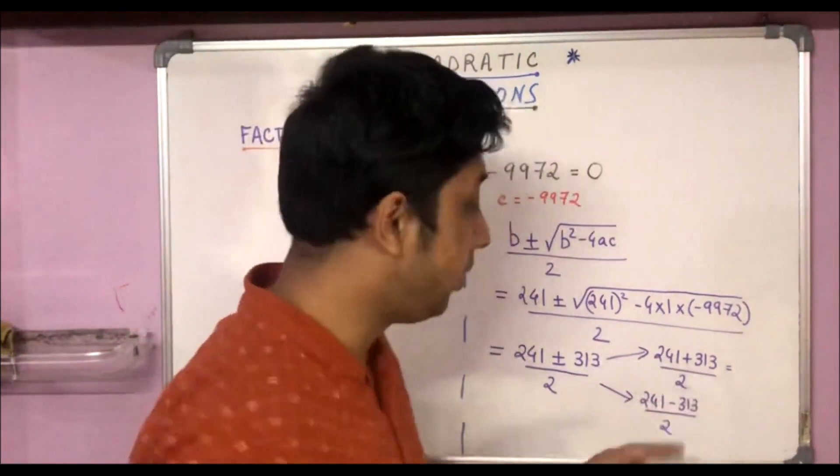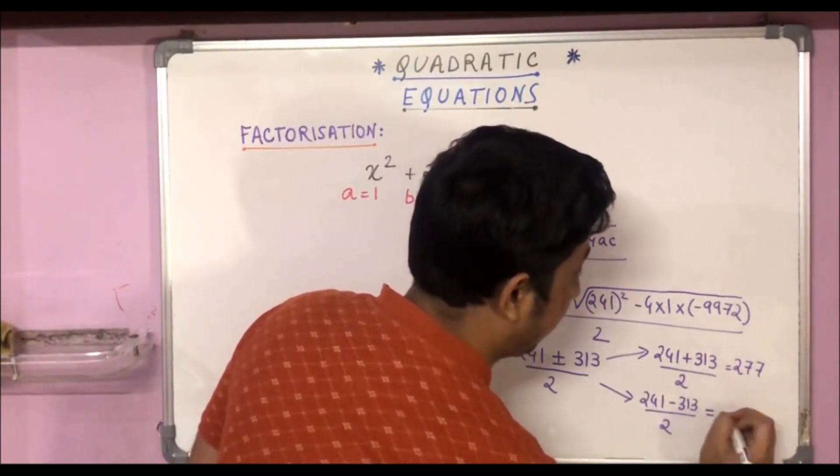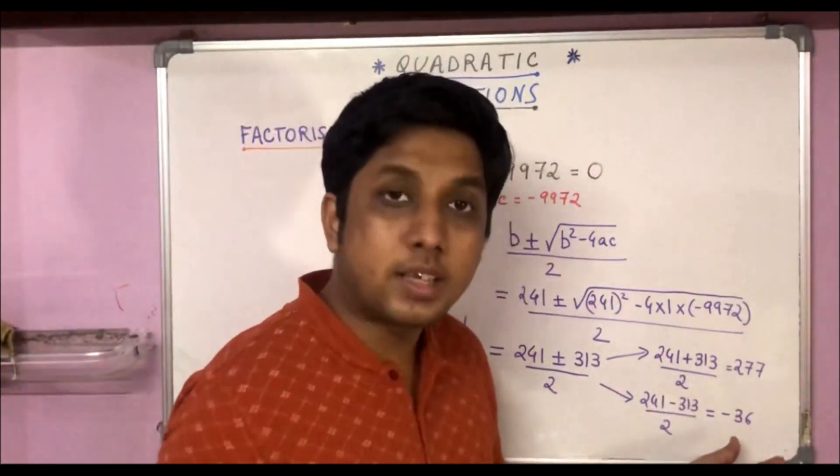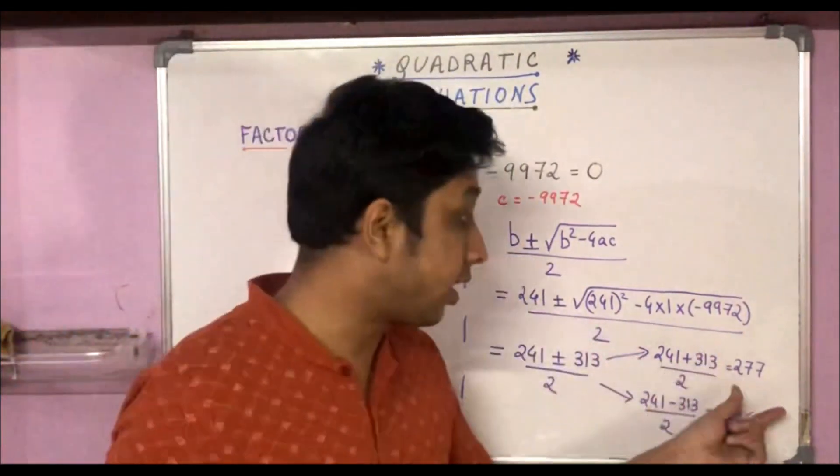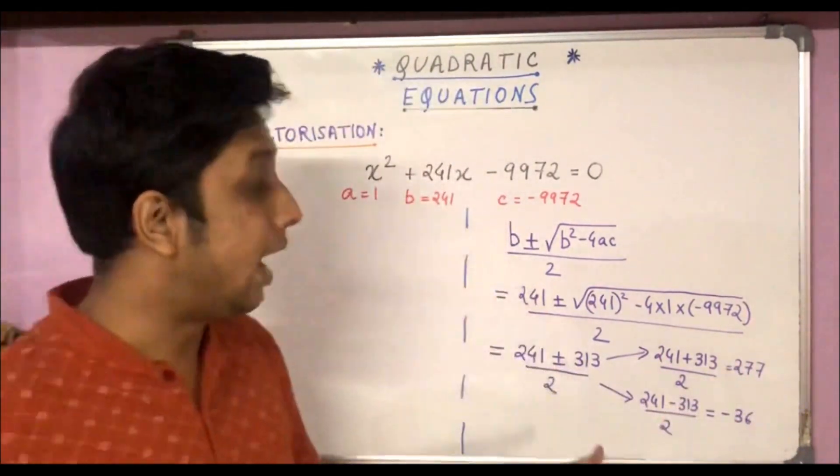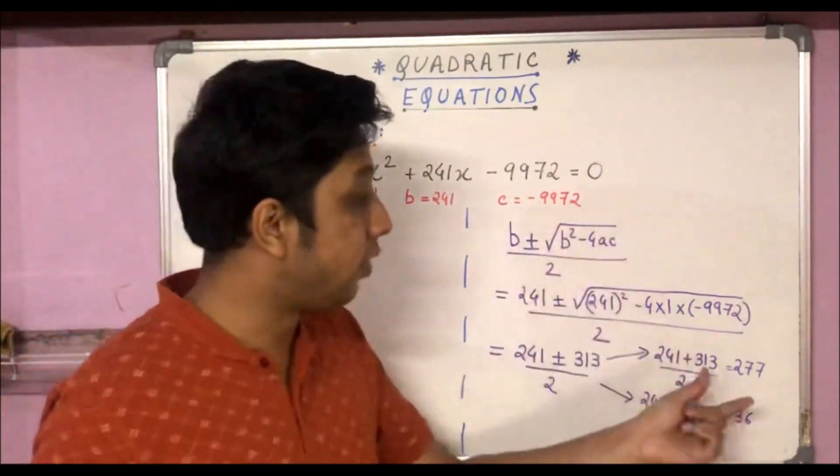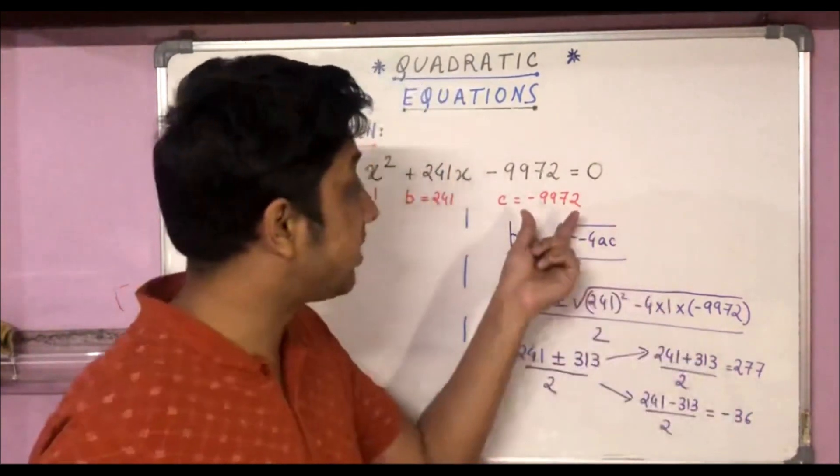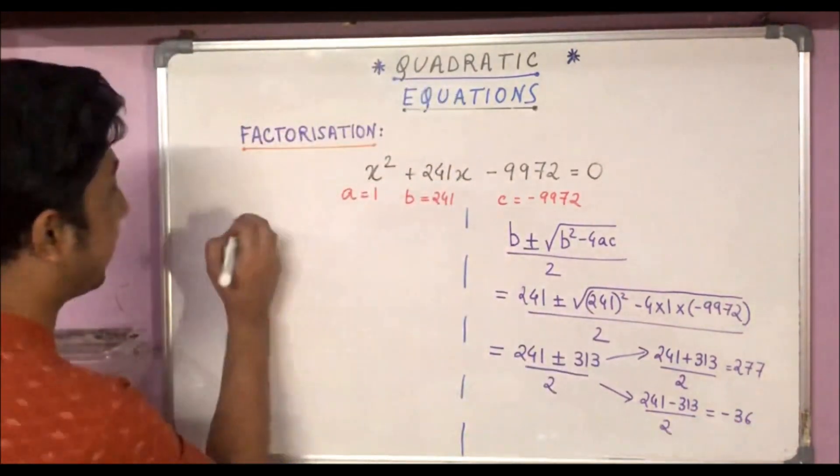If we calculate here we will get 277 and -36. So if we add these two terms, 277 - 36, do we get 241? If we check, actually 277 - 36 gives us 241. And the second thing we need to check is if we multiply these two, do we get -9972? So if we check, actually 277 × (-36) gives us -9972. So this trick worked. So let's use this middle-term break to factorize the equation.